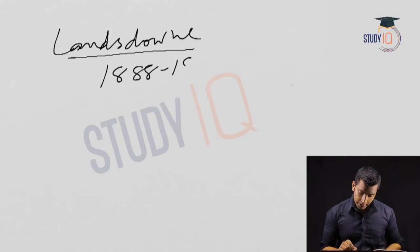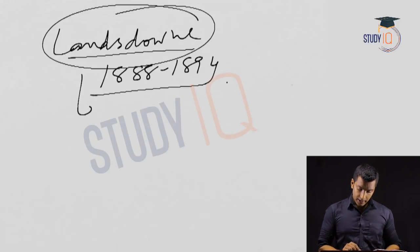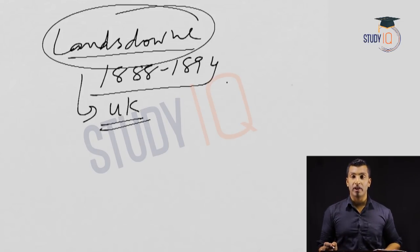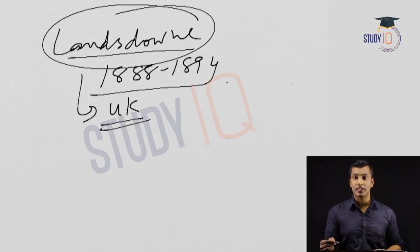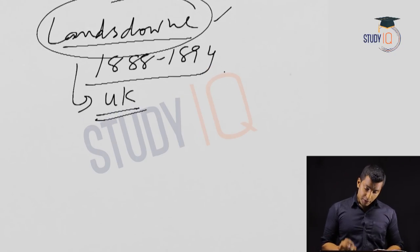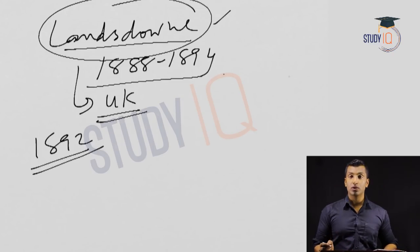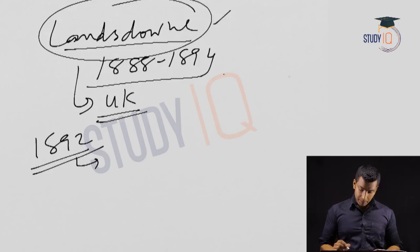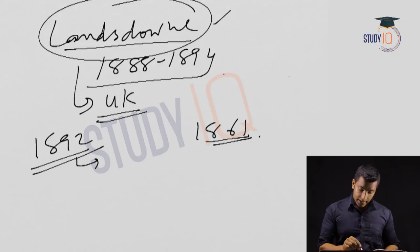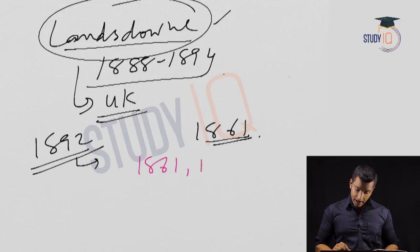The next Governor-General is Lord Lansdowne, 1888 to 1894. The important point to discuss under Lansdowne is the 1892 Indian Council Act. There were Indian Council Acts in 1861, 1892, and 1909 — three Indian Council Acts in total.